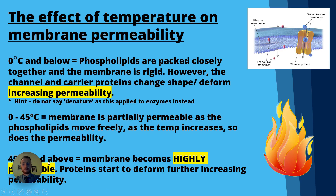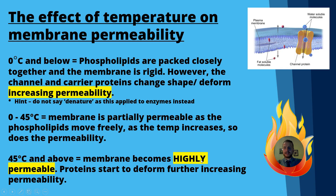At zero degrees and below, the phospholipids will be packed closely together and the membrane is rigid. You might think that would stop transport, but actually it doesn't — what it does is cause the proteins to change shape, or the tertiary structure to alter, which is going to increase permeability. So zero degrees and below increases permeability because the proteins change shape.